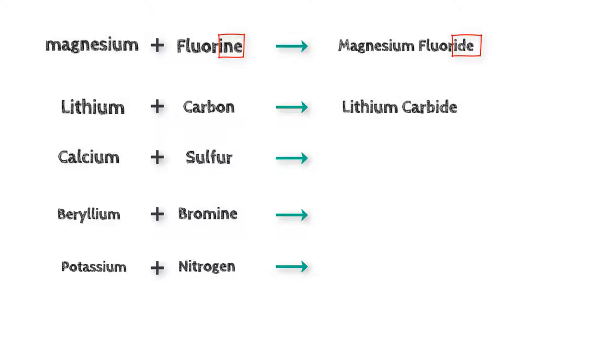Calcium reacts with sulfur and produces calcium sulfide. Beryllium reacting with bromine makes beryllium bromide. And lastly, potassium plus nitrogen makes the product potassium nitride.